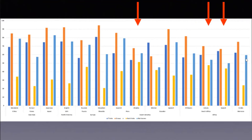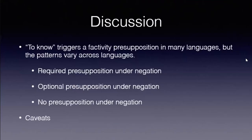There are also a few languages where there's no real difference between 'doesn't think' and 'doesn't know,' suggesting it's unclear whether any factivity presupposition is triggered. This needs to be confirmed. isiZulu and isiXhosa are tonal languages, so using verbal material may be an issue — tone may be what actually triggers the factivity presupposition there. We're still working on understanding this. Overall, 'to know' triggers a factivity presupposition in many languages, but the patterns vary: required in most, optional in some, possibly absent in a few.